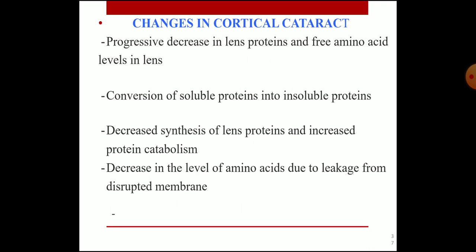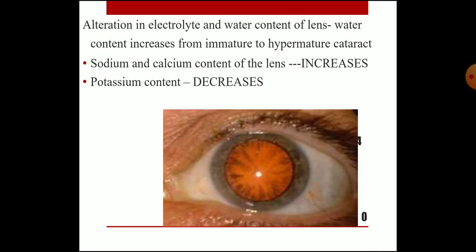Changes in cortical cataract: progressive decrease in lens proteins and free amino acids; conversion of soluble proteins to insoluble proteins; decreased synthesis of lens proteins; increased protein catabolism; and decreased amino acids due to leakage from disrupted membranes. Water content increases from immature to hypermature cataract; sodium and calcium content increases while potassium content decreases.